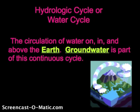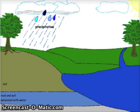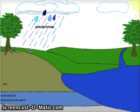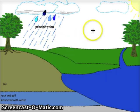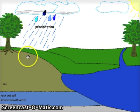Let's talk about the hydrologic cycle, sometimes called the water cycle. This is the circulation of water on, in, and above the earth, and groundwater is just a small part of this continuous cycle. Through this diagram you would see precipitation coming down, and once that precipitation hits the ground, several things can happen: the water could run off into lakes, rivers, and streams; it could evaporate back up into the atmosphere; trees could bring it up through roots and transpire it through leaves; or it could infiltrate — soak into the ground.